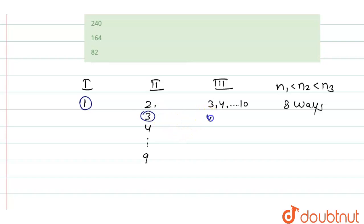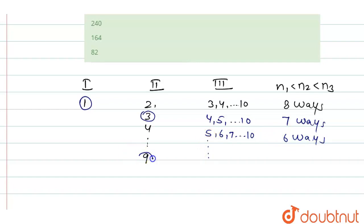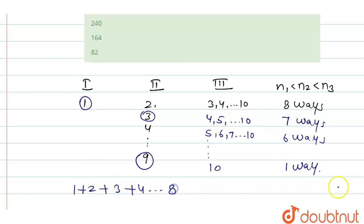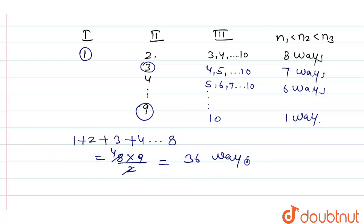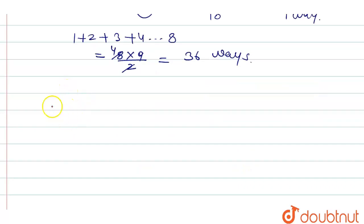If we fix 1 in box one and 3 in box two, the choices for box three are 4, 5, 6 up to 10 — that is 7 ways. If we fix 4 in box two, that gives 6 ways, and so on. If we fix 9 in box two, there is only one choice — 10 in box three — giving 1 way. The sum of all these ways is 1 + 2 + 3 + ... + 8, which equals 8 × 9 / 2 = 36 ways total when n1 = 1.